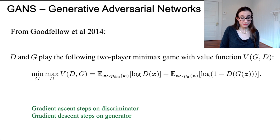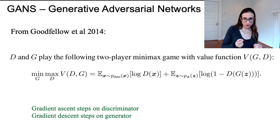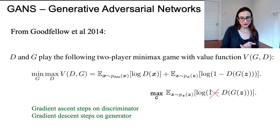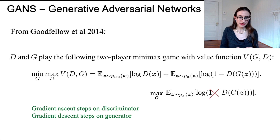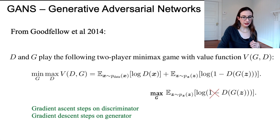Training a GAN is very, very difficult. If you thought a regular neural network was hard to train, a GAN is really, really hard. Generally, people do gradient ascent steps on the discriminator — because you're maximizing with respect to D — and gradient descent steps on the generator. One trick is that the 'one minus' inside the log actually makes training difficult, so people often remove it and have the generator maximize log of D instead, so both are doing gradient ascent. That apparently makes it a little easier to train.